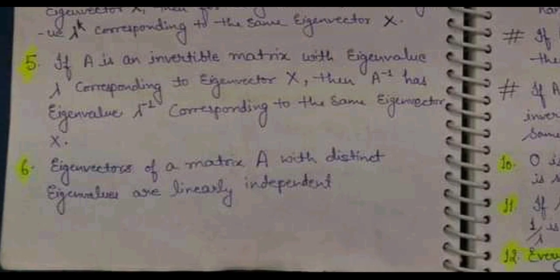The next property: eigenvectors of a matrix A with distinct eigenvalues are linearly independent. Distinct means if the eigenvalues are all different, then the eigenvectors corresponding to those eigenvalues will be linearly independent.